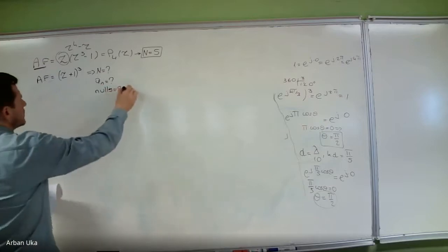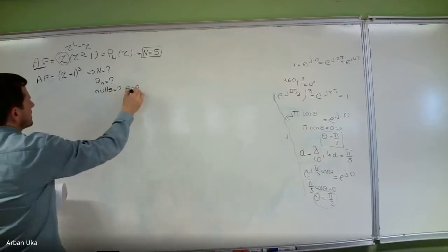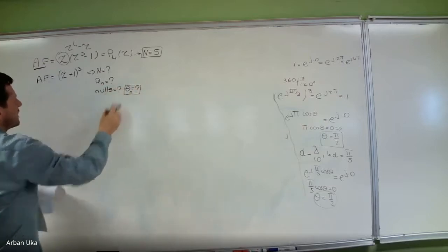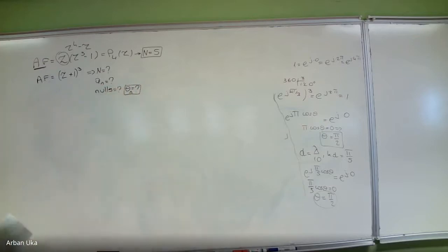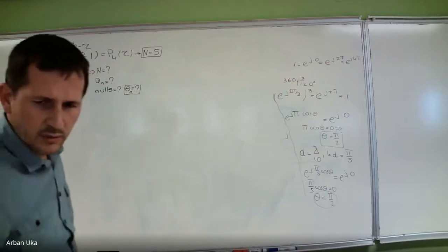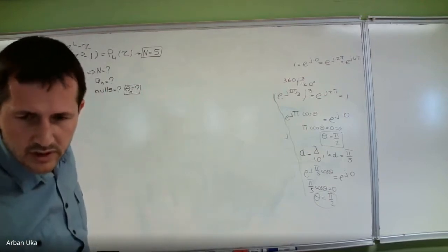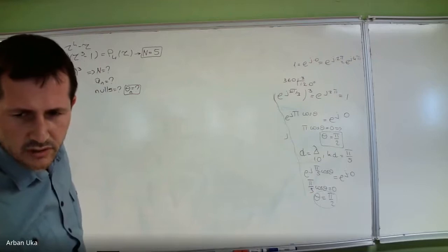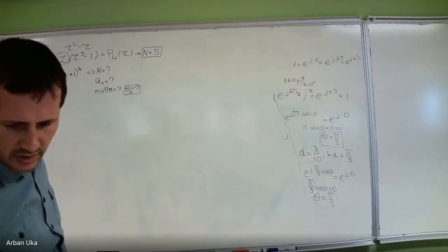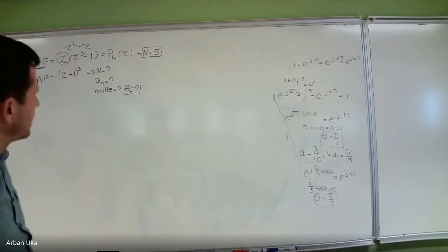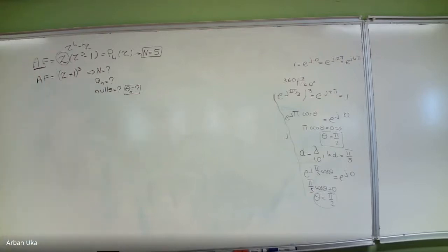When we say 'what are the nulls,' we're asking what are the angles — what are the angles where we're going to get zero radiated power in a specific direction. So regarding this array factor,